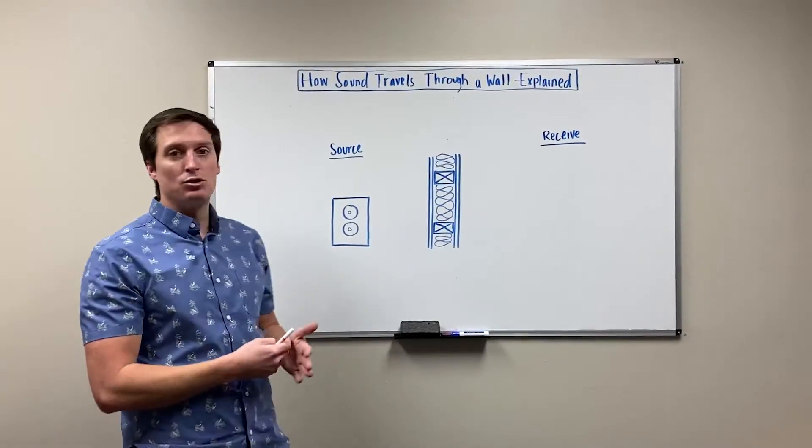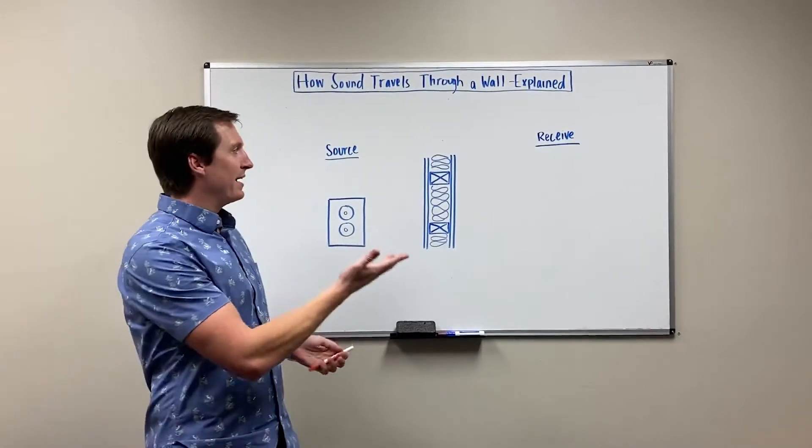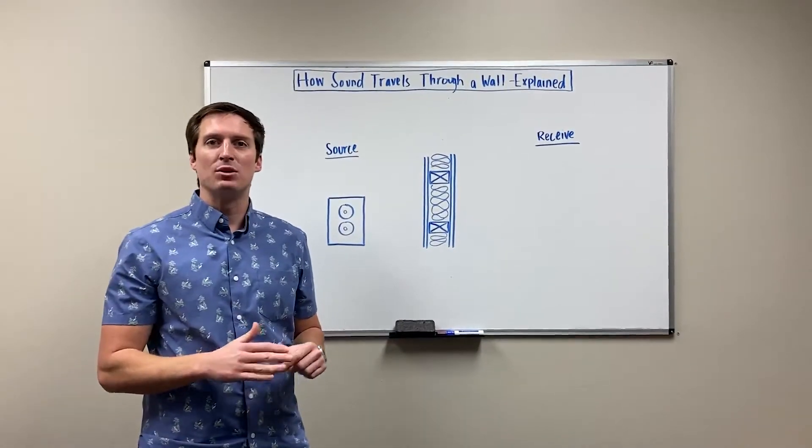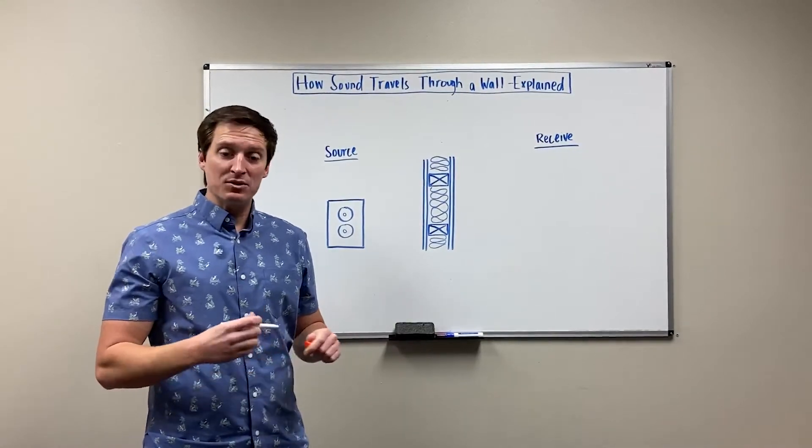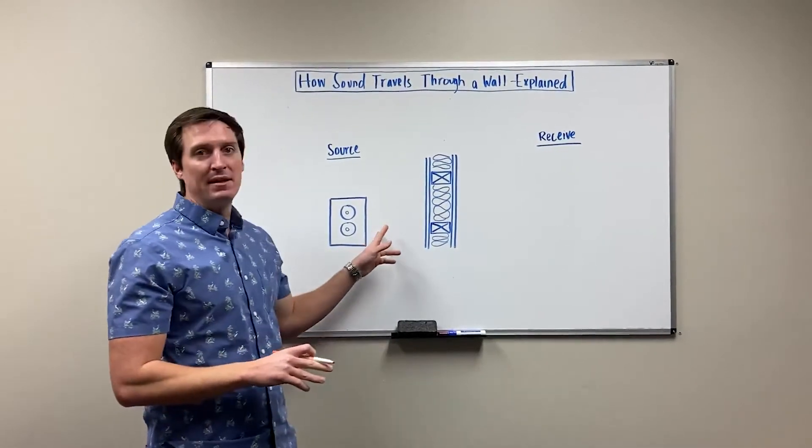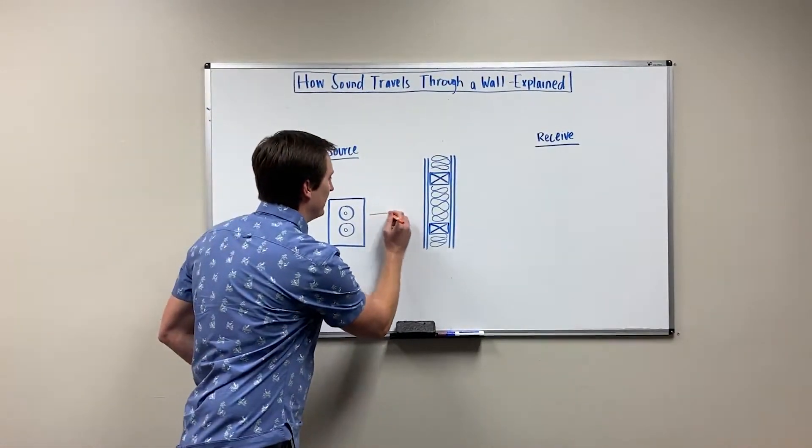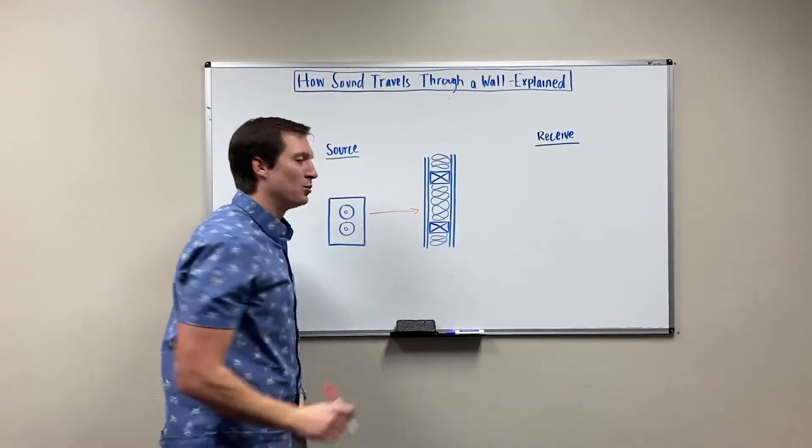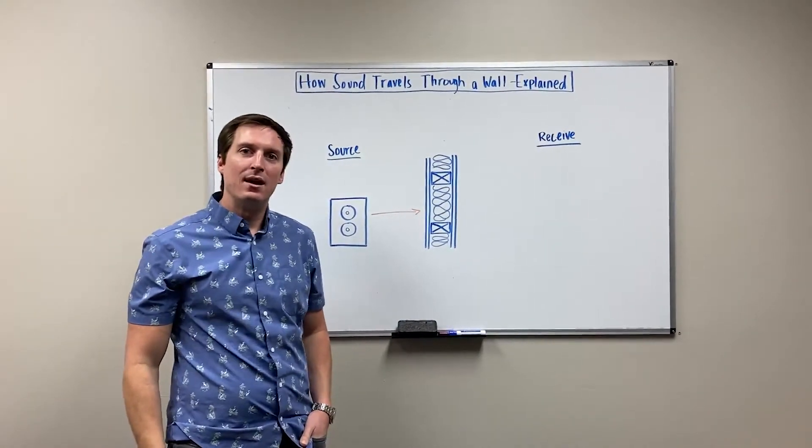On the left-hand side is the source noise, which can be talking, music, or TV. The right-hand side will be the receive side, so it could be an office, apartment, or something like that. The first thing that happens is noise is emitted on the source side from the speaker here.